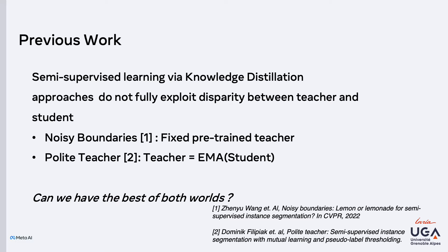These approaches do not exploit different kinds of disparities between the teacher and the students, and are therefore prone to overfit to certain representations. Noisy boundaries keeps the teacher fixed during training and as such is prone to overfit the mistakes of the teacher. Polite teacher, which is the current state of the art, does not pre-train the teacher but uses an exponential moving average from the students, and is therefore strongly biased towards the initial representation from the students before starting the EMA updates.